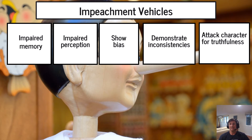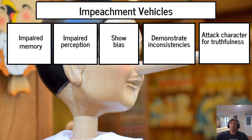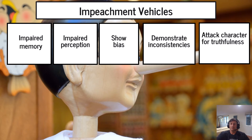Two more impeachment vehicles are more grounded in the rules. You can demonstrate inconsistencies: if a witness said the shirt was green and yellow previously but now says it was red and blue, you can explore that inconsistency. Even if the color of a shirt isn't critical to the case, you can still get into inconsistencies in testimony — especially from prior statements — to argue: 'This is a person who can't remember what color the car was in the accident; how can we trust them on the color of the light and whose fault it was?'